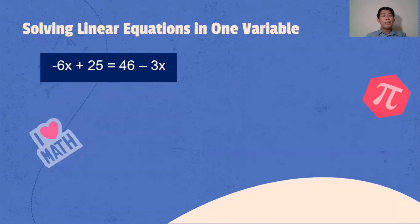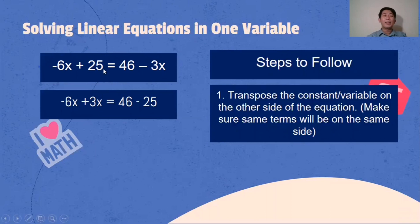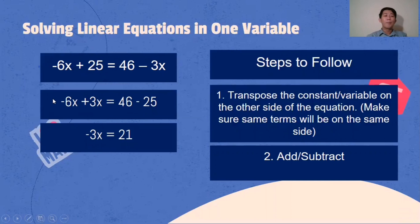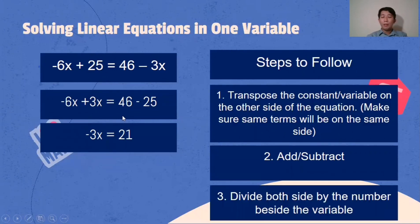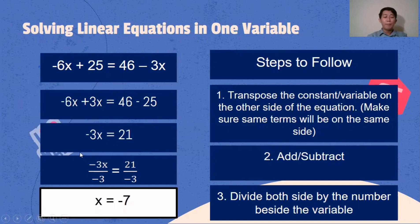Another example: -6x + 25 = 46 - 3x. Transpose negative 3x to the other side — it becomes positive 3x. Transpose positive 25 to the other side — it becomes negative 25. Then add or subtract: -6x + 3x is -3x; and 46 minus 25 is 21. So -3x = 21. Divide both sides by negative 3: x equals 21 divided by negative 3, which is negative 7. Final answer: x = -7.